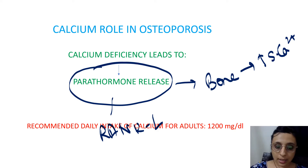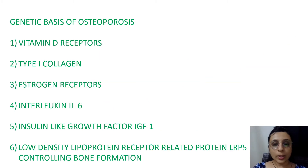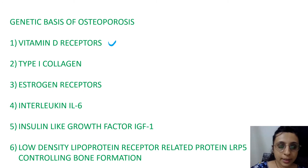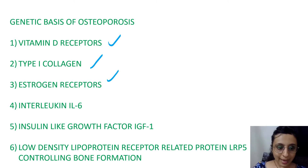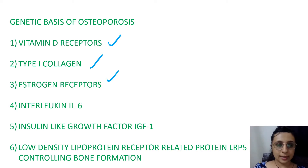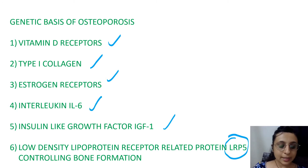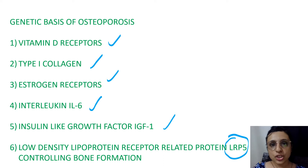The recommended daily intake of calcium is 1200 mg per day. Regarding the genetic basis of osteoporosis, vitamin D receptors play a role in calcium metabolism and bone formation. Any defect in vitamin D receptors, type 1 collagen, estrogen receptors — making them insensitive to estrogen — interleukin-6, insulin-like growth factor 1, and LRP5 (low-density lipoprotein receptor-related protein) all contribute. Osteoporosis does have a very important genetic basis.